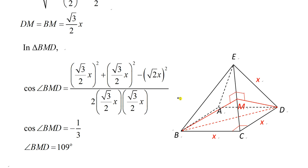Simplifying the numerator and denominator, x² cancels and we get cos(angle BMD) = −1/3. Therefore angle BMD is approximately 109 degrees (correct to 3 significant figures). That's the end of the question.